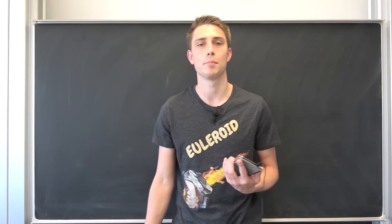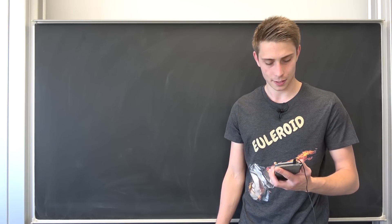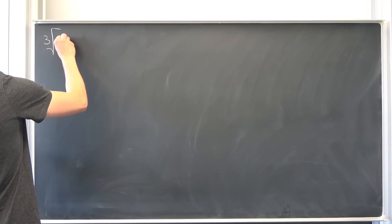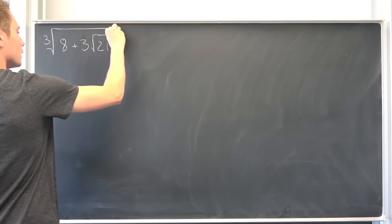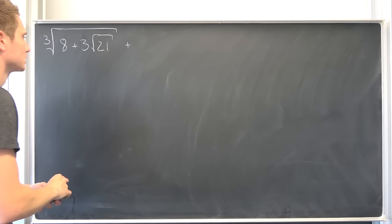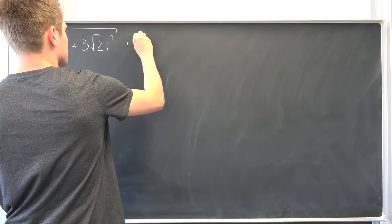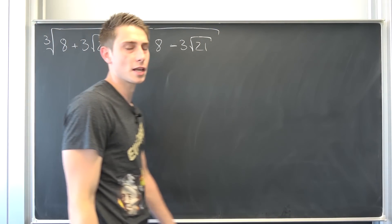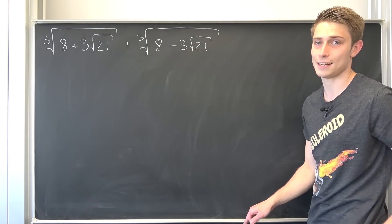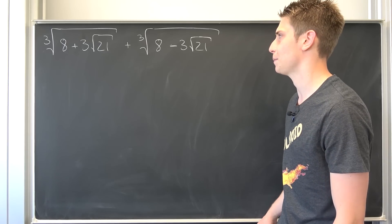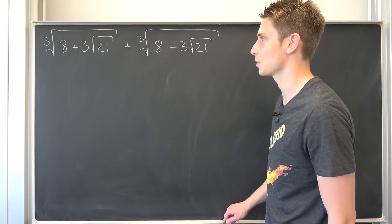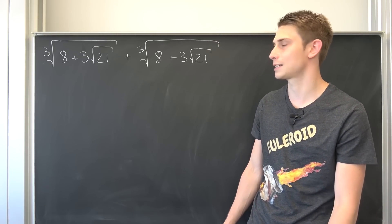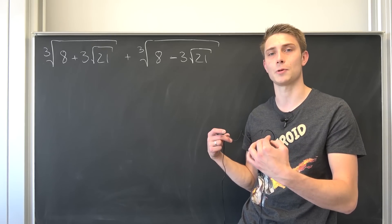Only trust your own math skills. We are going to have the third root of 8 plus 3 times the square root of 21, plus the conjugate, meaning the third root of 8 minus 3 times the square root of 21. OP found this on Facebook in some math group, and it's always the same algorithm: give this a new name, do some binomial theorem stuff, and you're basically done.